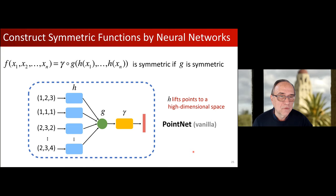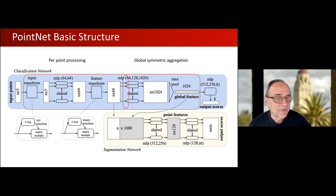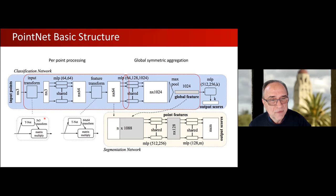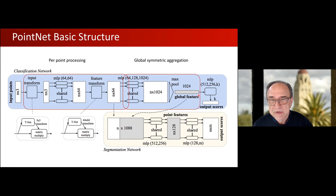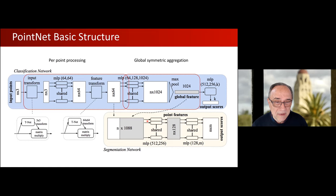In full glory PointNet looks like this — it has two sections. The lifting part goes from three dimensions up to 1024 dimensions through a number of MLP (multi-layer perceptron) stages, interspersed with some canonicalization networks that try to transform the data into a more standard form so the network has an easier time understanding it. Then there is the aggregation part using max pooling to get a global feature by taking the max across each of the 1024 features. We can pass this to another small MLP to get per-class output scores for classification. Or one can take an intermediate lifted representation, concatenate the global features — giving a per-point representation in global context — and push that through an MLP to get per-point classification scores as needed in segmentation.